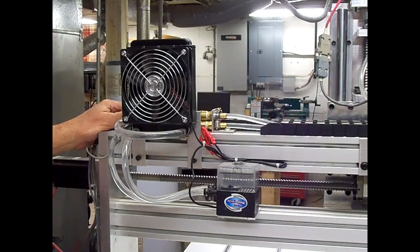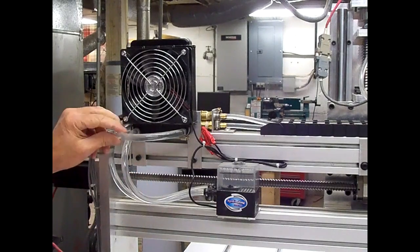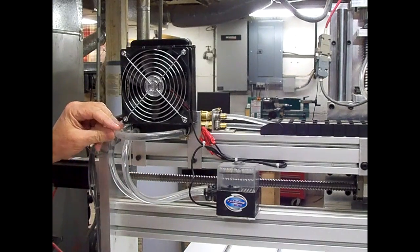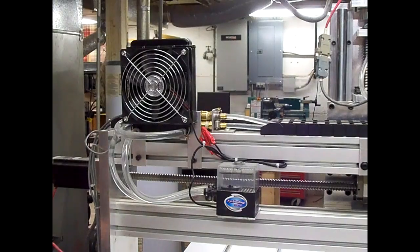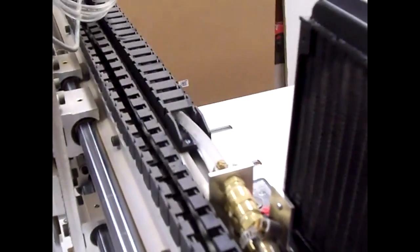There are two different size tubings: 5/16 inch ID for the pump and heat exchanger, then I had to convert it to quarter inch ID to go to the spindle motor right here.